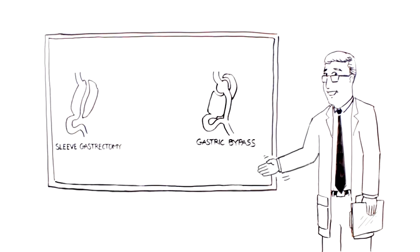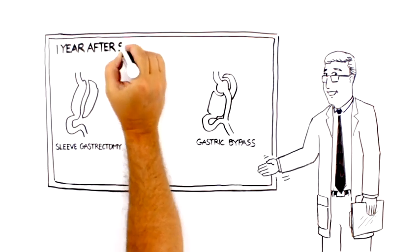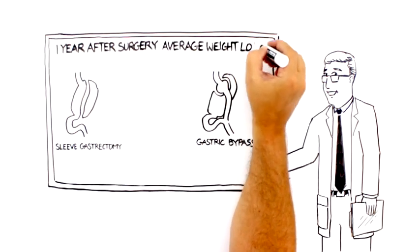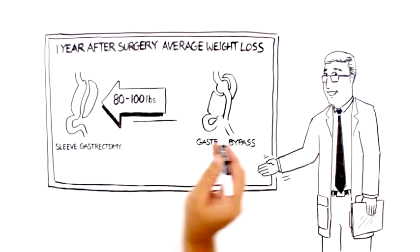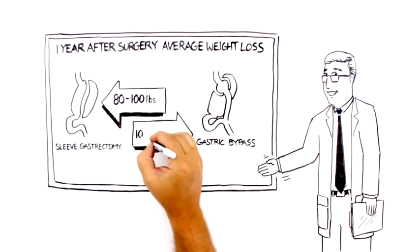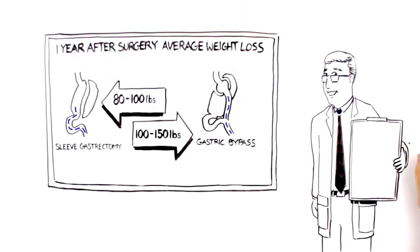Both procedures are effective and durable. One year after surgery in a typical patient, the average weight loss is 80 to 100 pounds for sleeve gastrectomy and 100 to 150 pounds after gastric bypass.